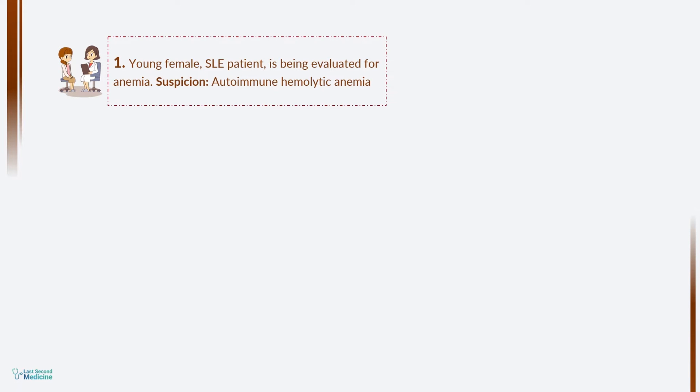Before going to Coombs test, let's see a few clinical scenarios. Scenario 1: A young female is being evaluated for anemia. She is a known case of systemic lupus erythematosus, and you want to evaluate her for autoimmune hemolytic anemia.